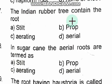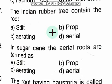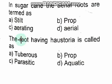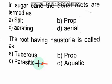The Indian rubber tree contains which type of roots? The right option is prop roots. In sugarcane, the aerial roots are termed as stilt roots — that is the correct option. The next question: roots having haustoria are called parasitic roots — option C is the right answer.